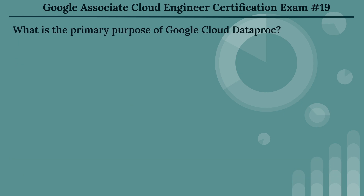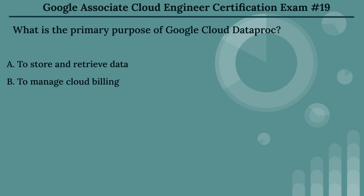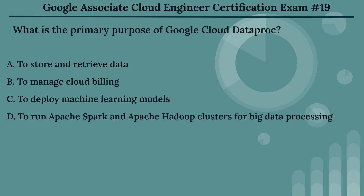The nineteenth question: what is the primary purpose of Google Cloud Dataproc? The options are: Option A, to store and retrieve data. Option B, to manage cloud billing. Option C, to deploy machine learning models. Option D, to run Apache Spark and Apache Hadoop clusters for big data processing.